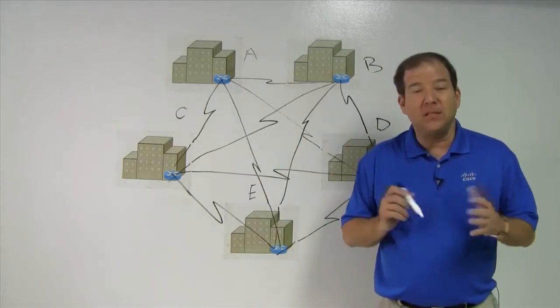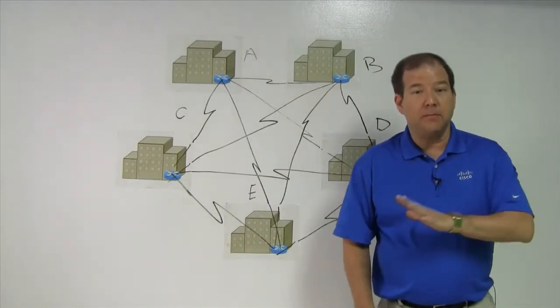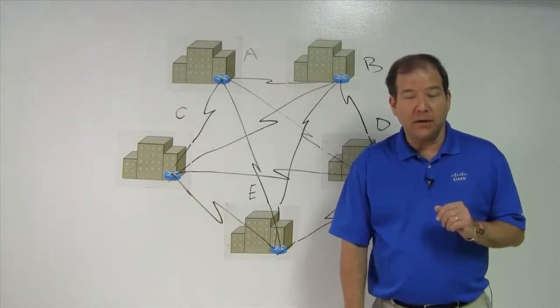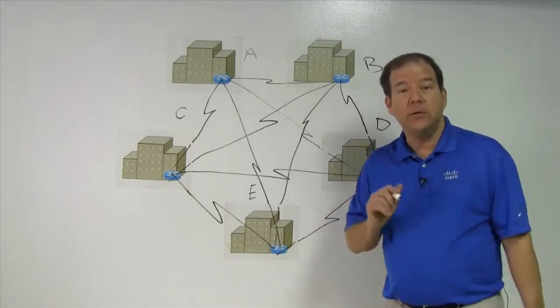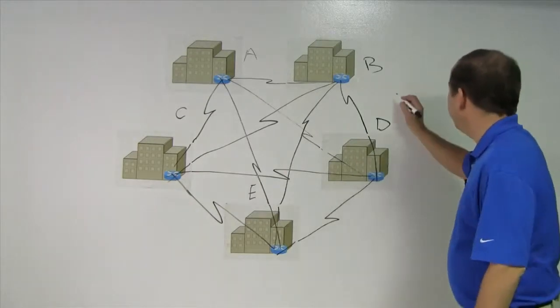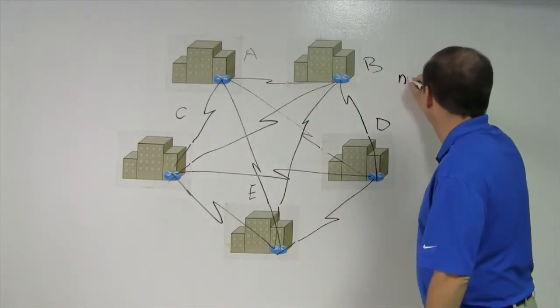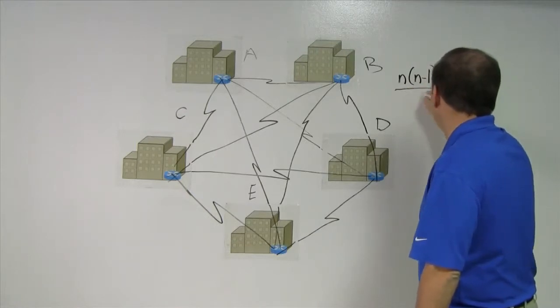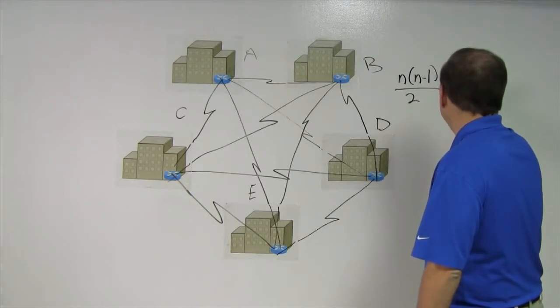This is not very scalable either. There's some math behind the number of links that you have to have to interconnect a certain number of sites. Here's the formula for your notes. The formula is n times n minus 1 divided by 2. That equals the number of links you have to have.